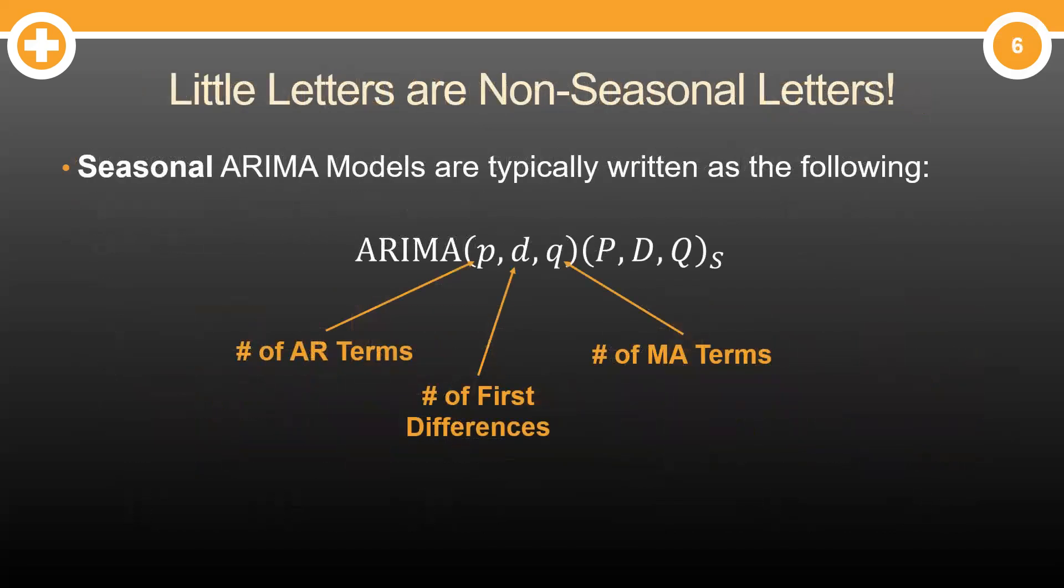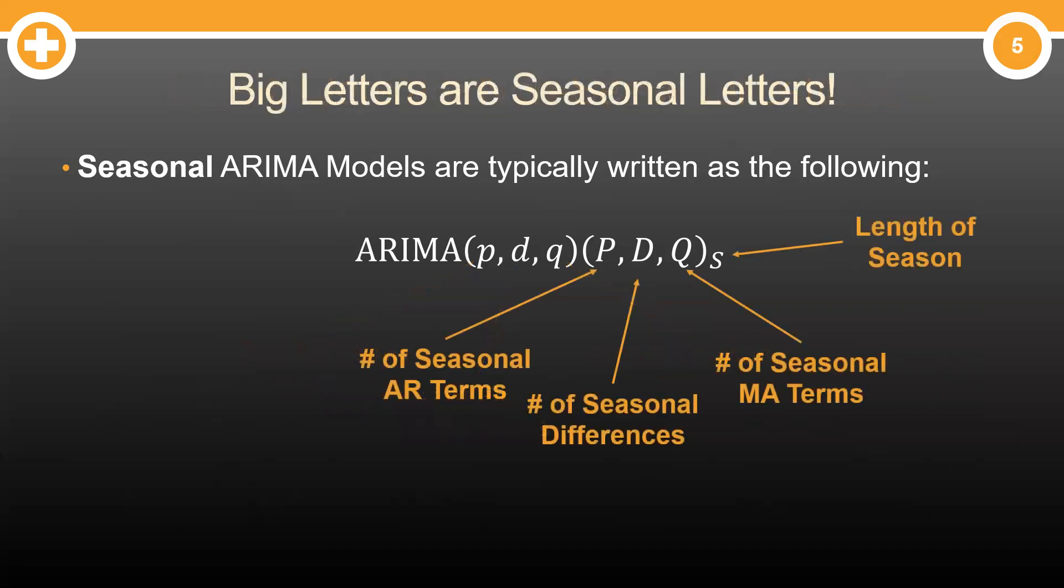This leads to the creation of the seasonal ARIMA model. We still have the regular ARIMA pieces. Little p represents the number of AR terms. Little d, the number of first differences. Little q, the number of MA terms.